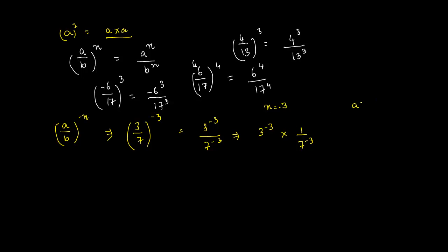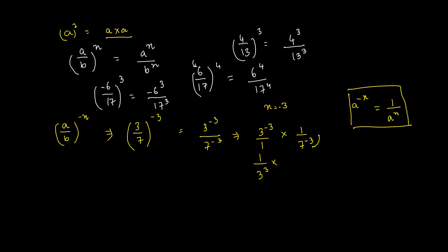We know from earlier that a to the power minus n equals 1 upon a to the power n. Applying this rule, 3 to the power minus 3 becomes 1 upon 3 to the power 3 — the base moves to the denominator and the power becomes positive. Similarly, 7 to the power minus 3 becomes 7 to the power 3 in the numerator. So the expression becomes 7 to the power 3 upon 3 to the power 3, where a equals 3 and n equals minus 3.